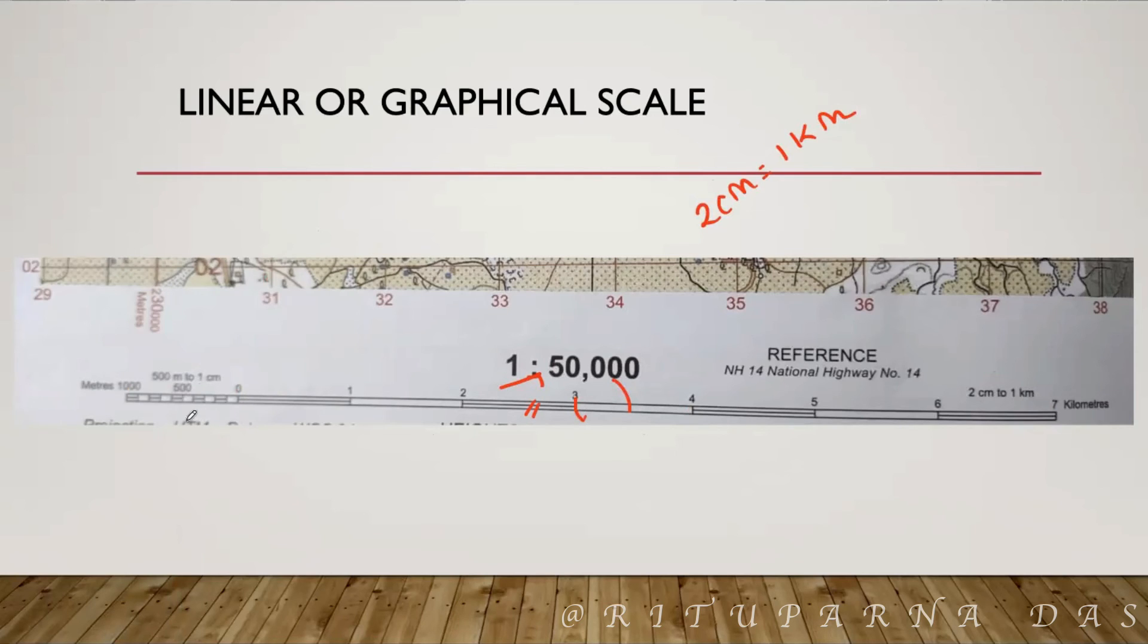If you notice carefully, the secondary division is further divided into 10 parts. This is 1, 2, 3, 4, 5, 6, 7, 8, 9, 10. And each part is 100 meter.